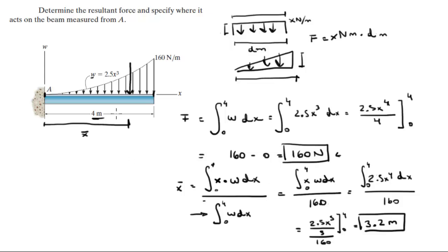Which means that the equivalent resultant force is 160 newtons. There's only one force, so that's the resultant force, and it acts along x bar, and x bar is equal to 3.2 meters. Final answer.